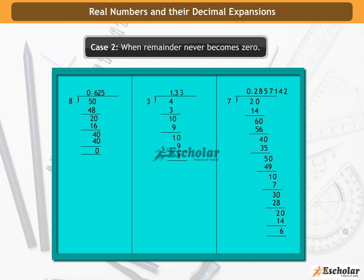The decimal expansion of rational numbers is either terminating or non-terminating and repetitive.